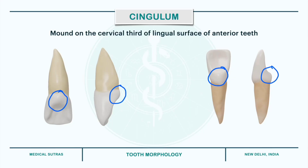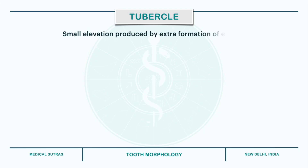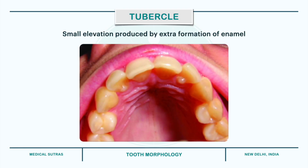Finally, the last elevation we are going to discuss is the tubercle. These are small elevations found on some portions of the crown and are produced by extra formation of enamel. For example, here we can see a small elevation on the lingual surface of lateral incisors — these are known as tubercles. This prominent tubercle sometimes takes the form of a cusp and is often referred to as a talon cusp.